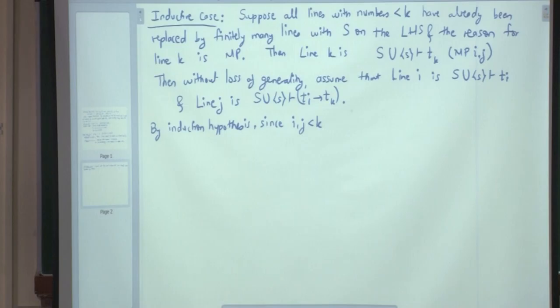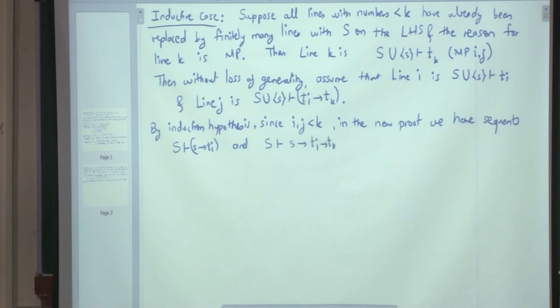since I and J are less than K, in the new proof, we have sequent. What sequent do we have? We have sequent S proves S implies T_I